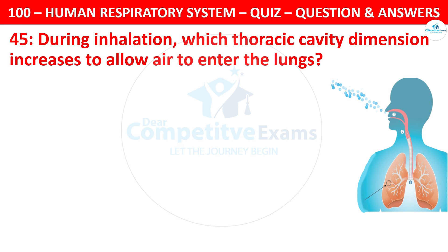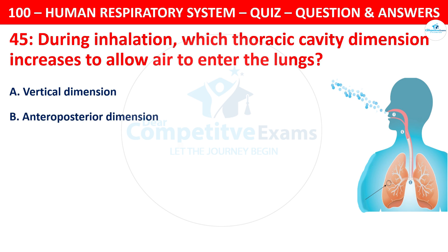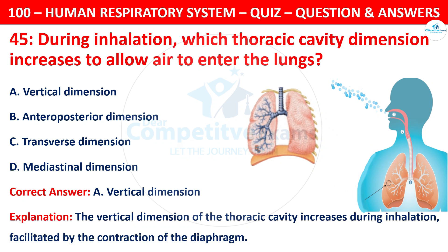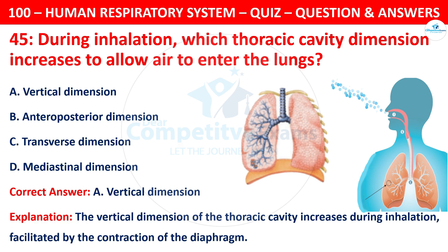Question 45: During inhalation, which thoracic cavity dimension increases to allow air to enter the lungs? The options are: vertical dimension, anteroposterior dimension, transverse dimension, or medial sternal dimension. The correct answer is A — vertical dimension. The vertical dimension of the thoracic cavity increases during inhalation, facilitated by the contraction of the diaphragm.